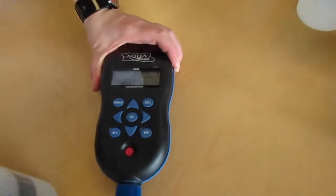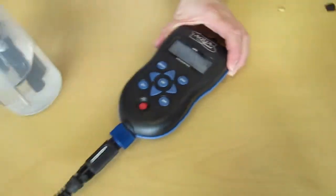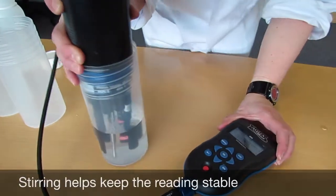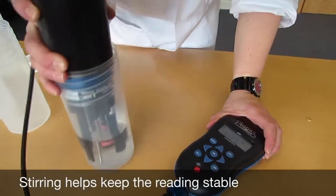When calibrating the ISE electrodes it's important to keep stirring as it prevents localized ionic depletion from the ISE electrode.